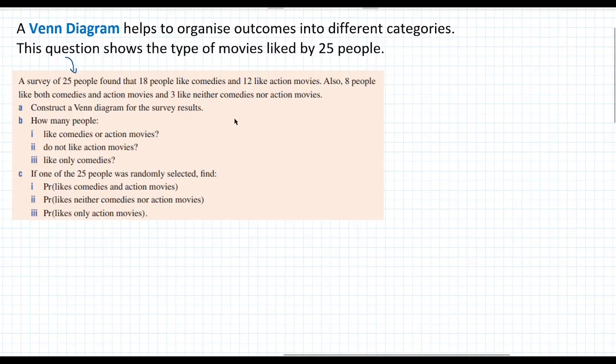Hi guys. In this video, we're going to look at Venn Diagrams. So a Venn Diagram helps to organize outcomes into different categories. For example, in this question, we've got the different types of movies liked by 25 people, and the categories that we have are comedy movies or action movies. So let's put this information into a Venn Diagram.